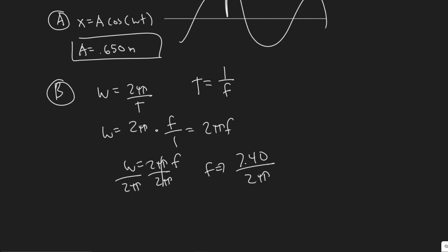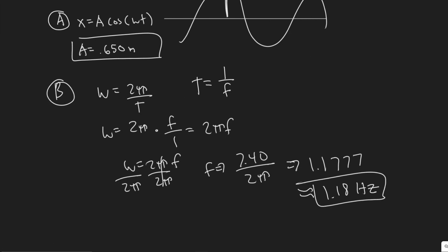Calculating: 7.40 divided by 2π gives 1.1777, so we round to 1.18. The units for frequency are hertz, which are the same as inverse seconds. So 1.18 Hz is the answer for part B.